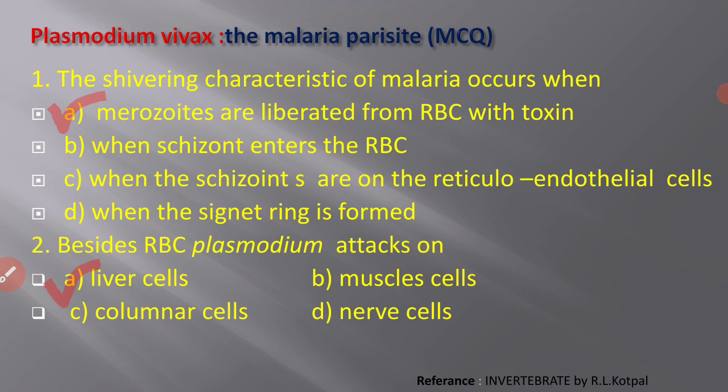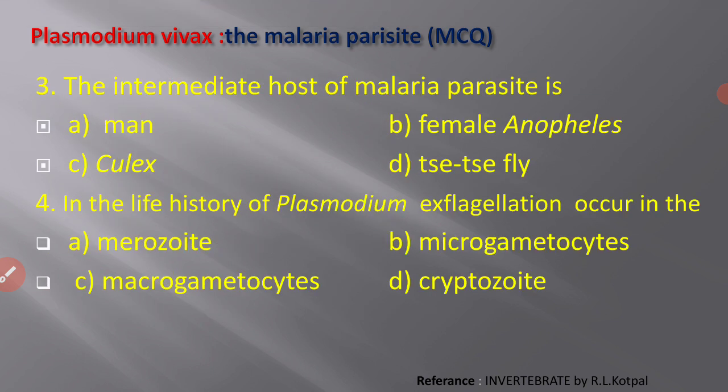Next MCQ: the intermediate host of malaria parasite is A) man, B) female Anopheles, C) Culex, D) tsetse fly. The malaria parasite requires two hosts to complete its life cycle — it is a digenetic parasite. The correct answer is female Anopheles; female Anopheles is the intermediate host of the malaria parasite.